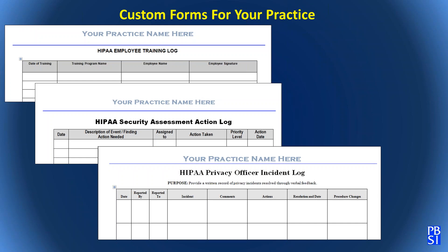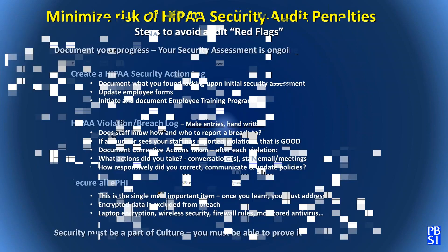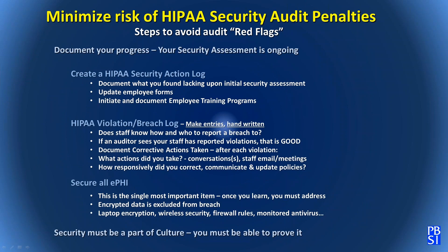Here are examples of logs you should be using. Auditors will ask for a log of employee training — what the training program was, the dates, the employee name, and the employee's signature confirming they received training. Your security risk assessment should have an action log: a description of the issue, who it was assigned to, what action was taken, a priority level, and a due date. You also need a privacy officer incident log — do your employees know who to report a privacy incident to? Document your progress. Update the security risk assessment for every attestation period. Make sure you have a HIPAA security log documenting what you found lacking upon initial assessment, update employee forms, maintain an employee training program, and keep breach logs with corrective action documentation.